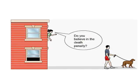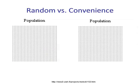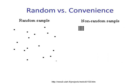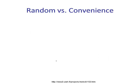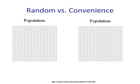As this slide shows, an example of convenience sampling is someone calling out to a person walking down the street asking, 'Do you believe in the death penalty?' Imagine this is our population — we have a random sample and a convenient sample, and as we can see, the random sample is going to be better.